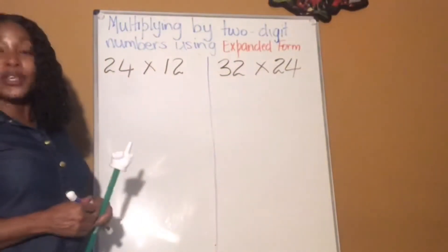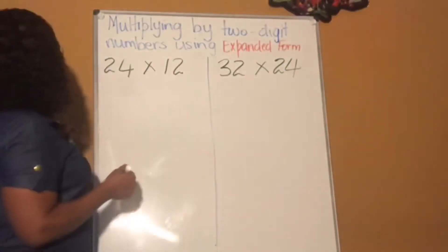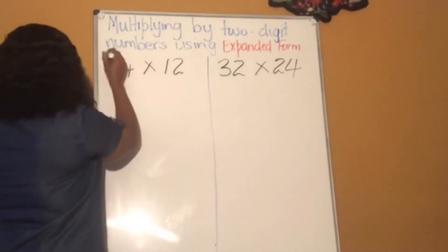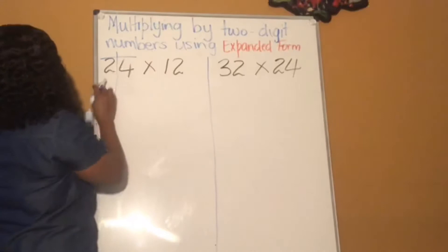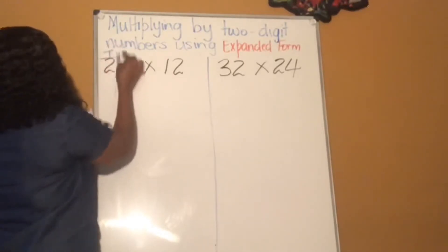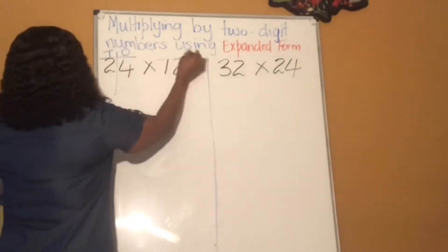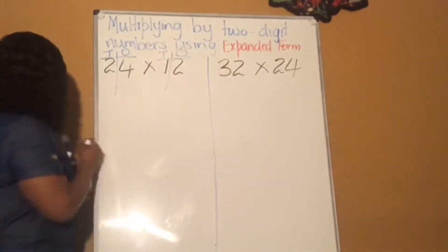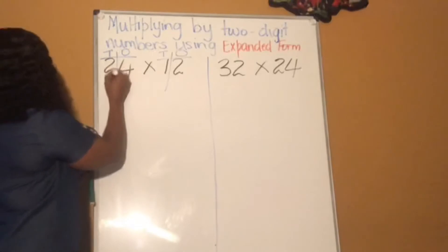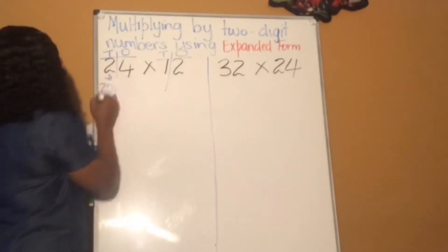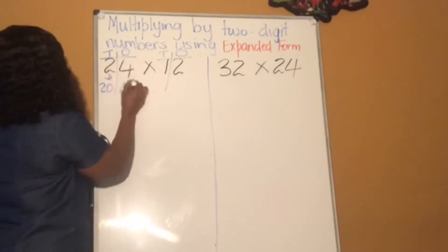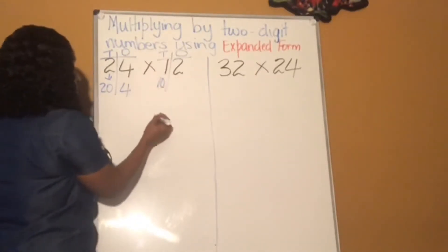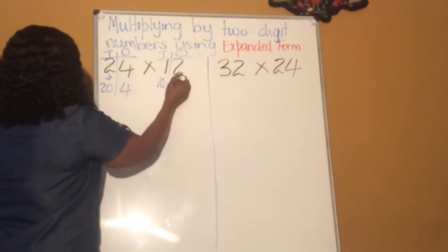All right, so the first thing you want to do is break apart your numbers. So here we have 24. 24 is two tens and four ones. And 12 is one ten and two ones. Now, two tens mean 20 and four ones mean four. And then one ten means 10 and two ones mean two.